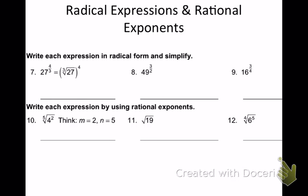Let's look at number 7: 27 to the 4 thirds power. Write each expression in radical form and simplify. My numerator goes to my power, denominator goes to my root. So what's the cube root of 27 first? What times itself 3 times is 27? 3. So I get 3 to the 4th power. What's 27 times 3? 81 is our answer.